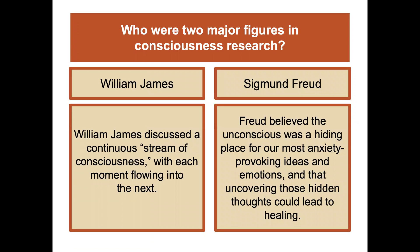There are two figures discussed in the Meijer Psychology for the AP Course, Third Edition — the text I'm following — as major figures in consciousness research: William James and Sigmund Freud. James discussed consciousness as a stream of consciousness, with each moment flowing into the next. Freud, on the other hand, believed that the unconscious was a hiding place for our most anxiety-provoking ideas and emotions, and that uncovering those hidden thoughts could lead to healing.